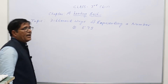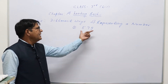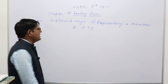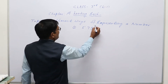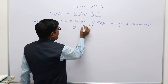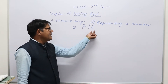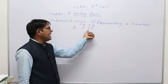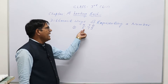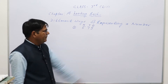How will we read the number 579? We start from the right-hand side: this is ones, this is tens, and this is hundreds. The digit at the ones place is 9, the digit at the tens place is 7, and the digit at the hundreds place is 5. So this is 579.